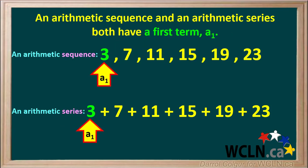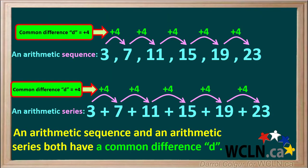Looking at similarities, an arithmetic sequence and an arithmetic series both have a first term A1, and both have a common difference D, which is equal to 4 in this case.